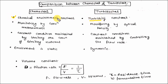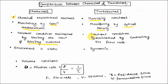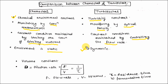Key differences between chemostat and turbidostat: in chemostat the chemical environment is kept constant, while in turbidostat turbidity is kept constant. Monitoring in chemostat is done by concentration measurement, while in turbidostat it is done by optical density. Constant conditions in chemostat are maintained by limiting the concentration of the limiting reagent, while in turbidostat they are maintained by controlling the flow rate. The environment in chemostat is static; in turbidostat it is dynamic.